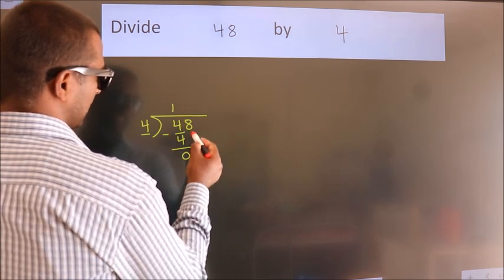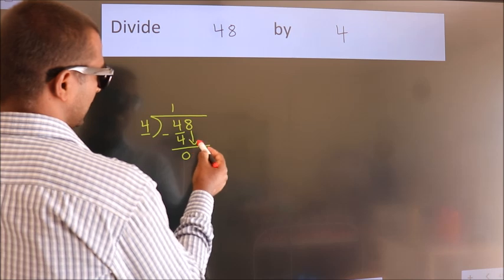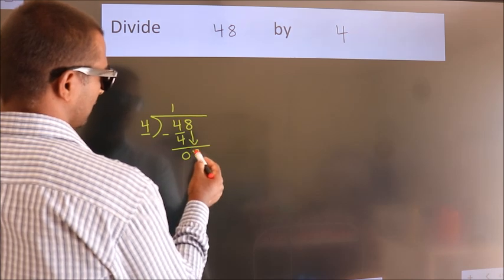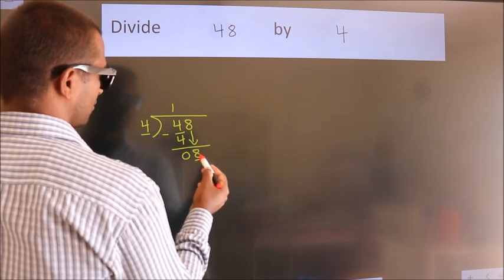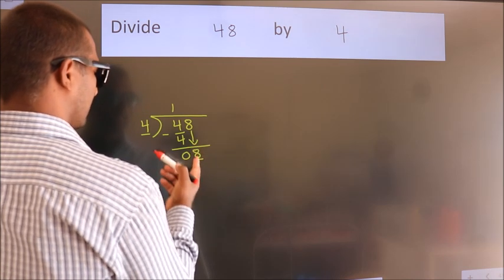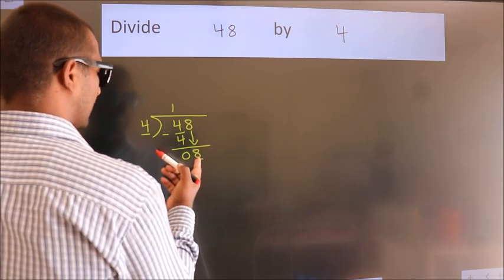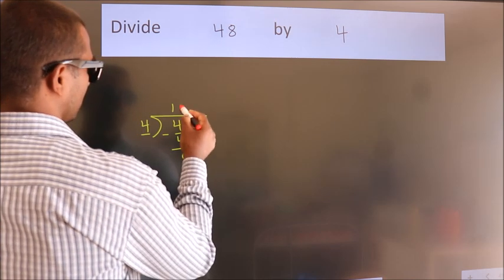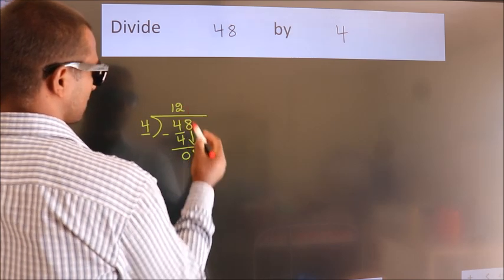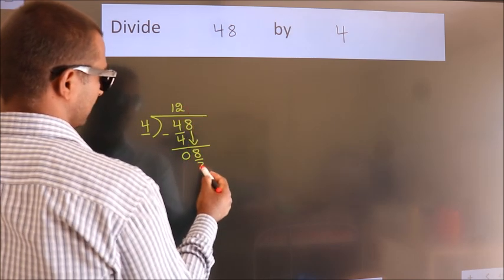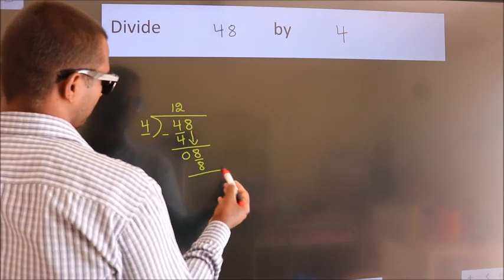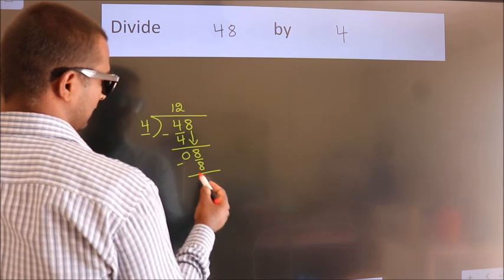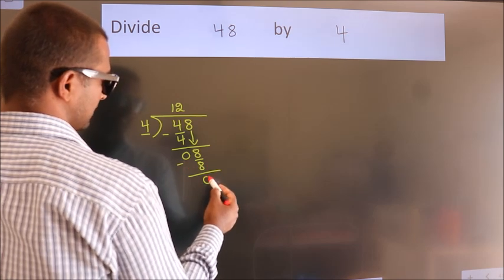After this, bring down the beside number. So 8 comes down — so 8. When do we get 8? In the 4 table: 4 twos are 8. Now we subtract. We get 0.